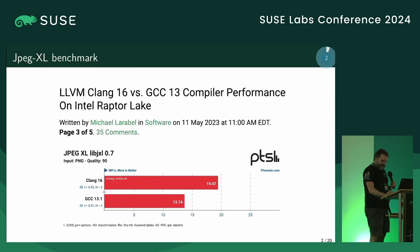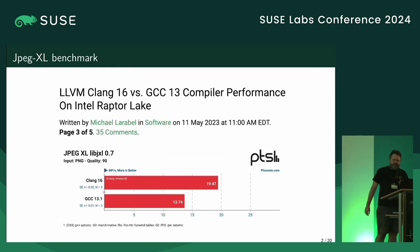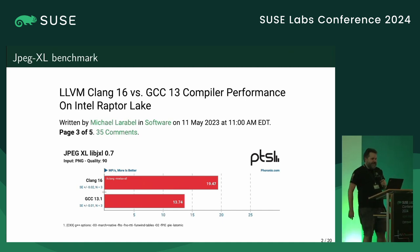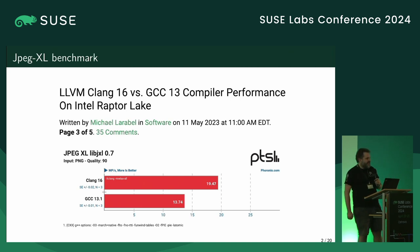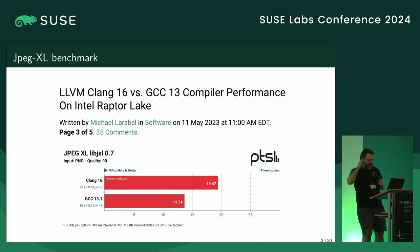The beginning of the story was actually a week before last year's ZUSELAPS conference. There was a comparison done by Phoronix about GCC 13 and Clang 16 at that time, and it was showing some benchmarks which were performing significantly better on Clang than on GCC.